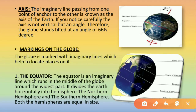Now let us move to the next point: axis. What do you mean by axis? The imaginary line passing from one point of anchor to the other is known as the axis of the earth. Axis is an imaginary line — it means these are not real lines drawn on the earth. These lines are just imaginary. The axis passes from one point of the anchor at the top to the other at the bottom, and this line is known as the axis of the earth.